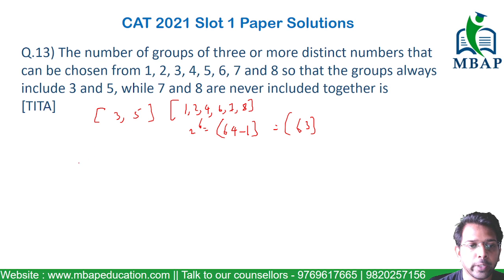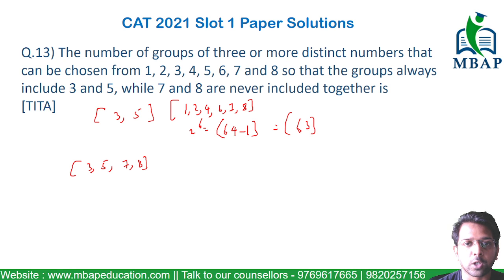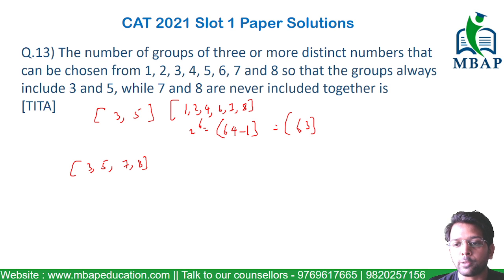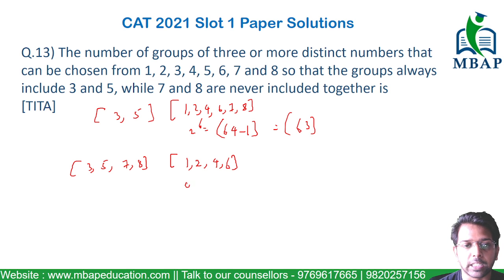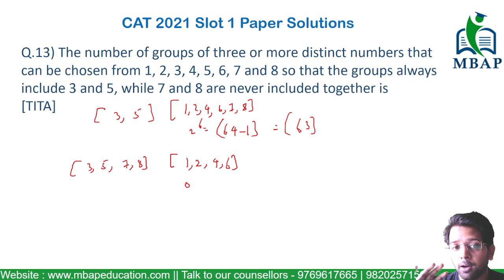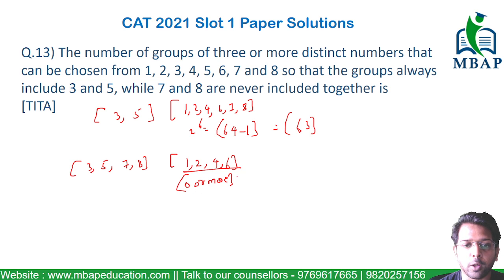But there's a catch. This 63 will also include all those instances where 7 and 8 have been taken together, which we don't want. Let's remove all those cases out of 63 which have a combination of 3, 5, 7, and 8. If we exclude 3, 5, 7, and 8 — which have been preselected — the numbers left are 1, 2, 4, and 6. Even if I select zero from these, that is valid because I already have four numbers chosen: 3, 5, 7, and 8. So from 1, 2, 4, 6, I need to select zero or more. From four objects, the number of ways to select zero or more is 2 raised to 4.